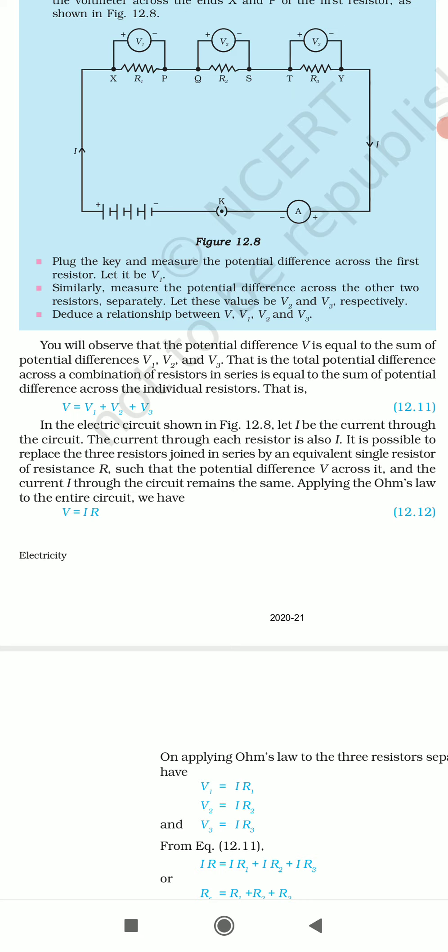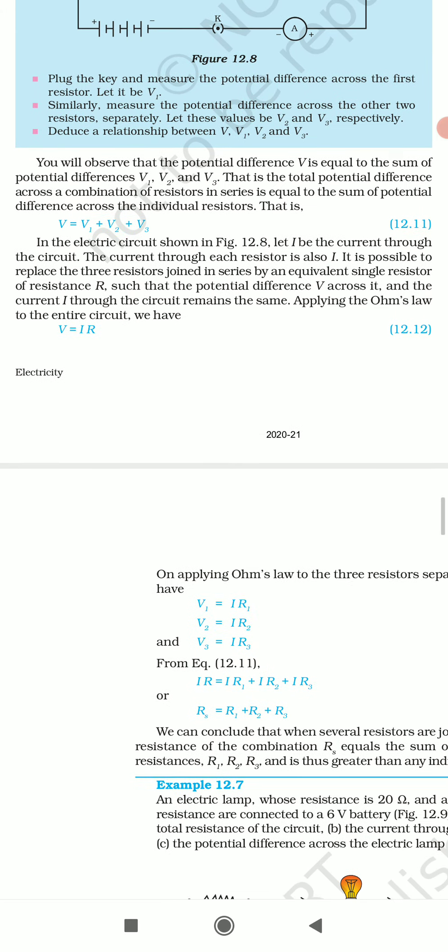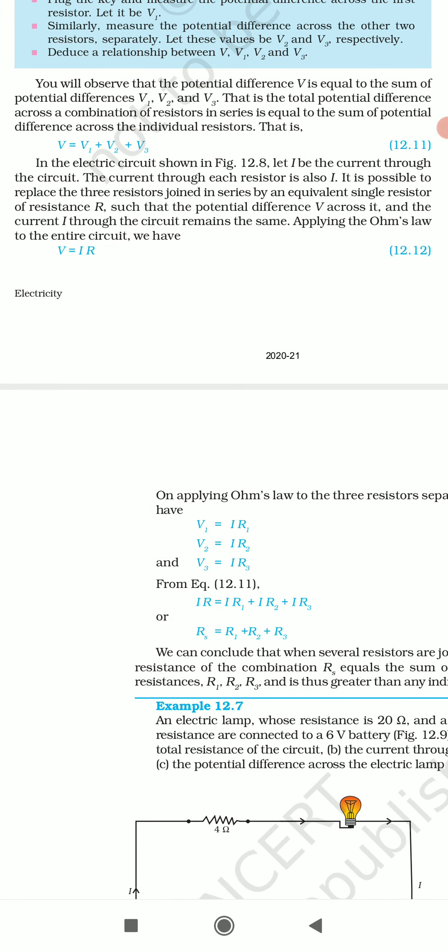That is, V = V1 + V2 + V3. In the electric circuit shown in figure 12.8, let I be the current through the circuit. The current through each resistor is also I. It is possible to replace the three resistors joined in series by an equivalent single resistor of resistance R, such that the potential difference V across it and the current I through the circuit remains the same. Jo current I hoga wo circuit mein same hi rahega, kyunki yeh series combination mein hai, aur V ka amount hoga sum of the potential differences amongst all the resistors. Applying Ohm's law, V = IR.